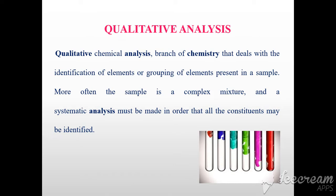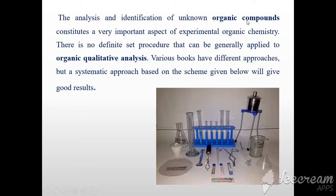The definition of qualitative analysis: Qualitative chemical analysis is a branch of chemistry that deals with the identification of elements or grouping of elements present in a sample. More often the sample is a complex mixture and a systematic analysis must be made so that all the constituents may be identified. The analysis and identification of organic compounds constitutes a very important aspect of experimental organic chemistry. There is no definite standard procedure that can be generally applied to organic qualitative analysis. Various books have different approaches, but a systematic approach based on the scheme given below gives good results.